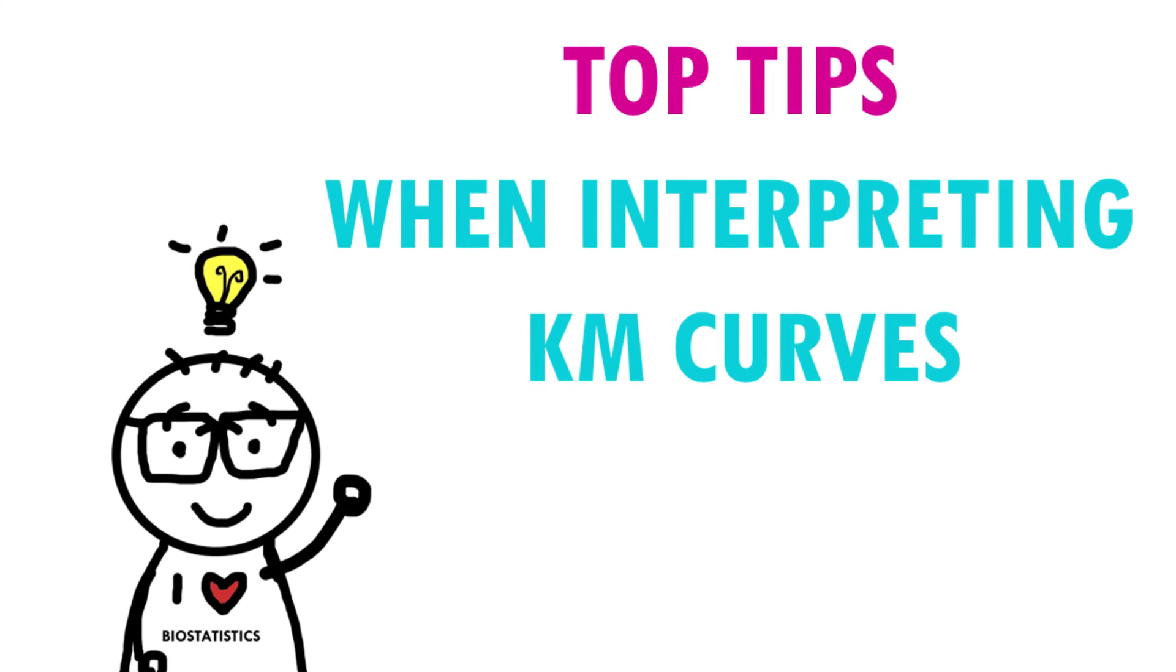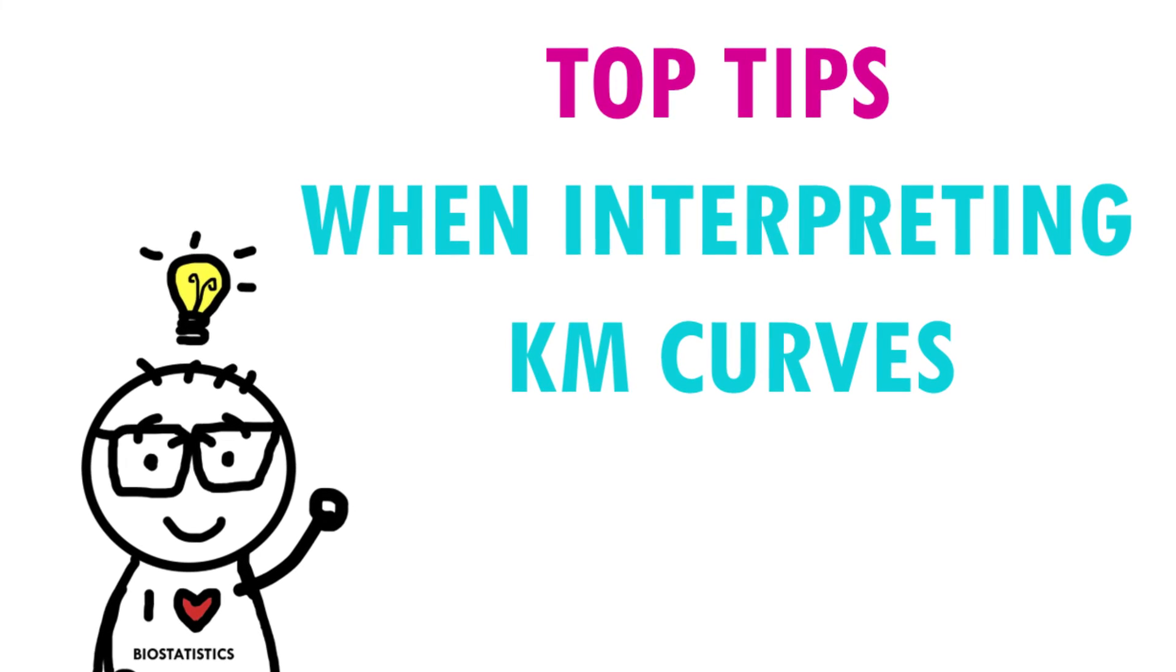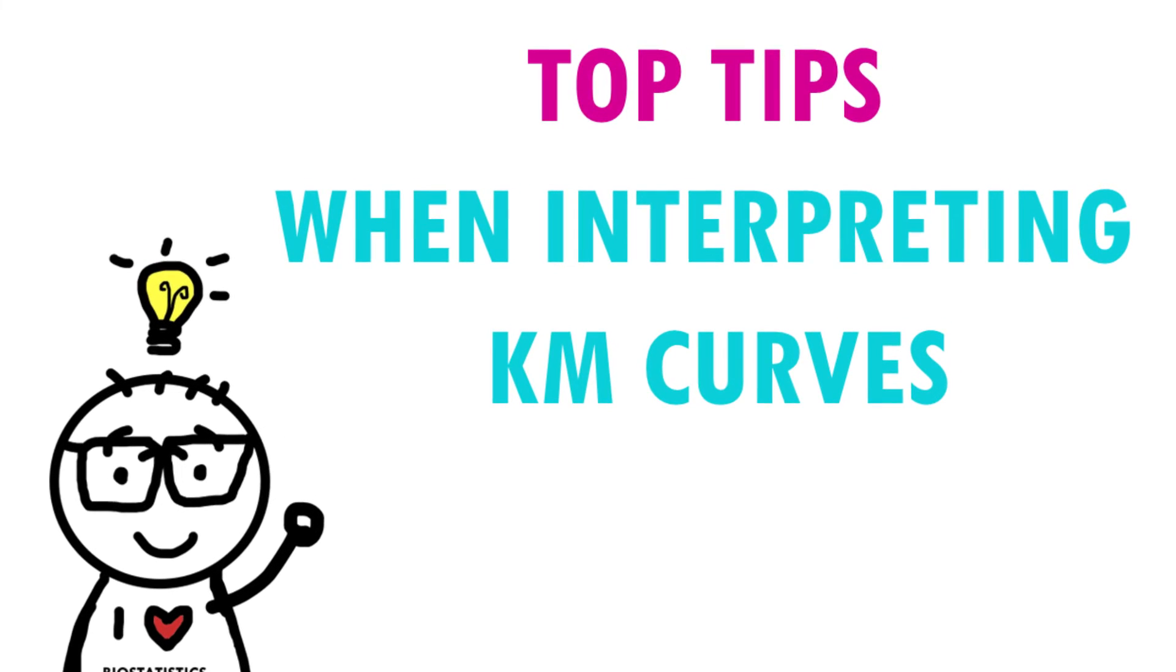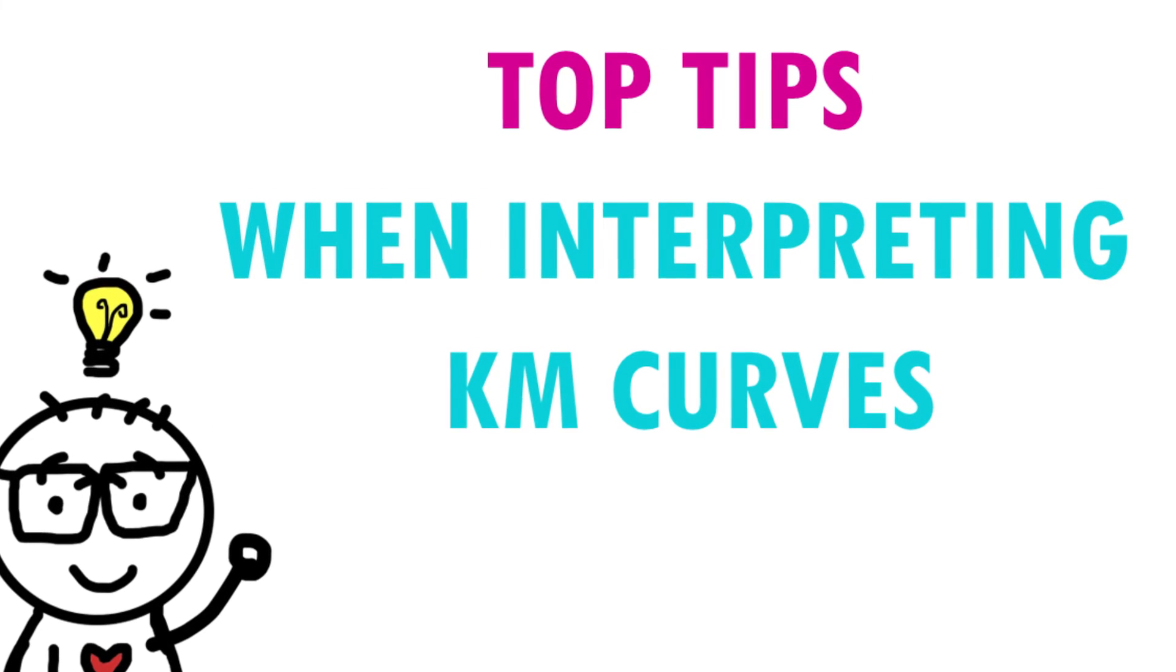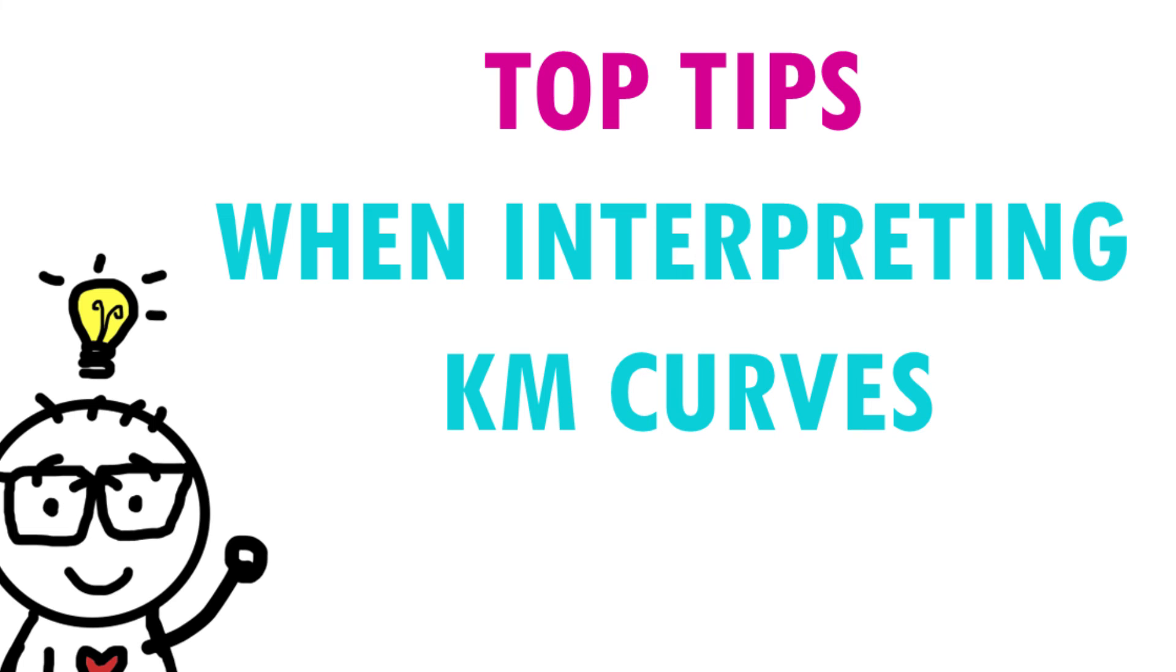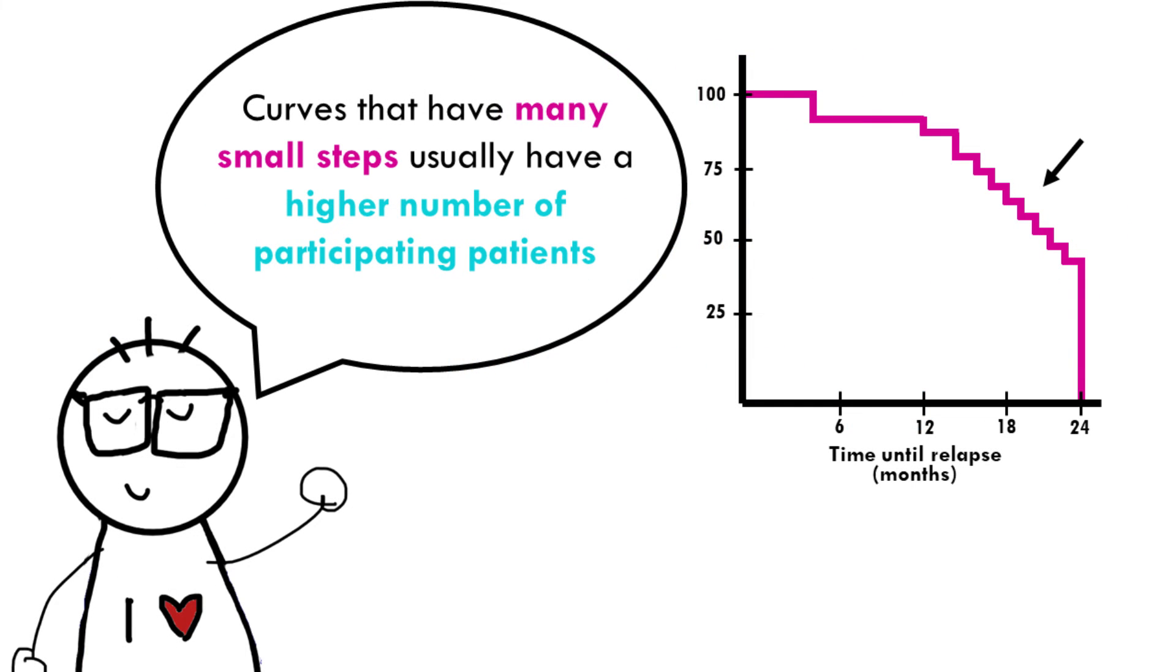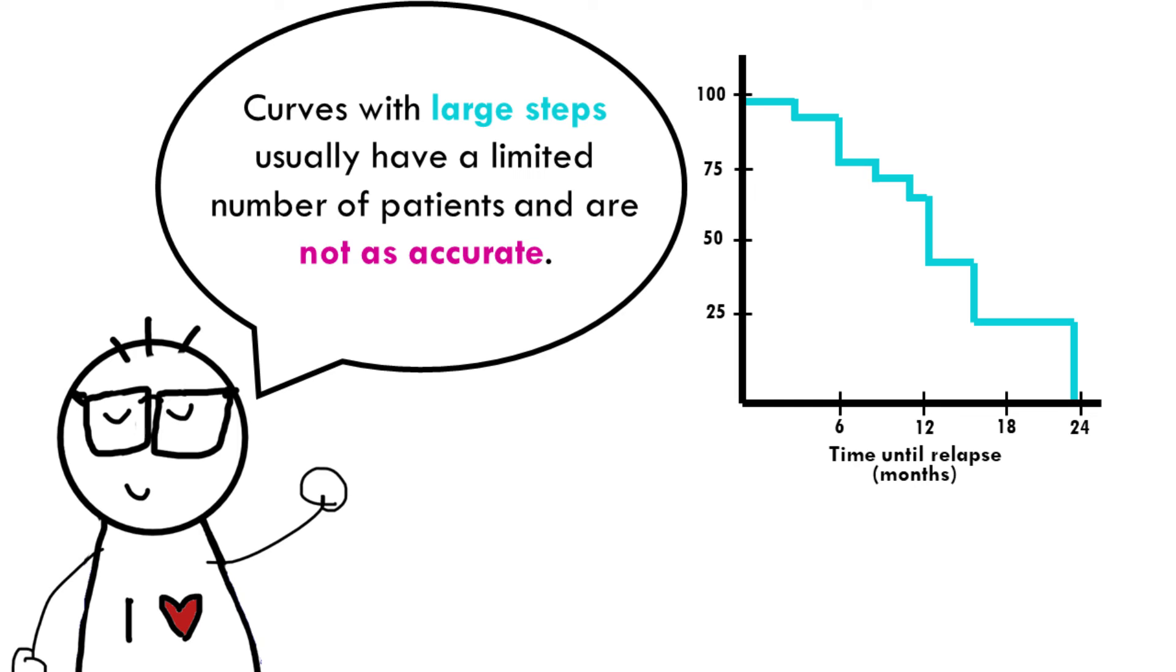To finish off, I will give you some general considerations and common pitfalls when interpreting Kaplan-Meier curves, things to be aware of to avoid misinterpretations. It's important to check out the shape of the curve. Curves that have very many small steps usually have a higher number of participating patients, whereas curves with very large steps usually have a limited number of patients and are not as accurate. Always check the number of individuals that are actually enrolled in the study.